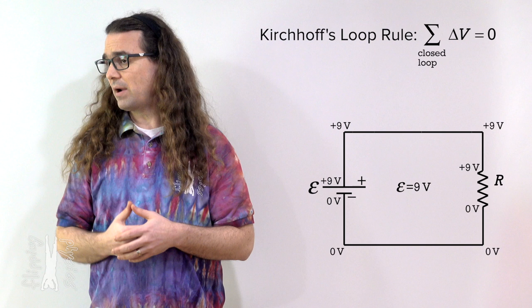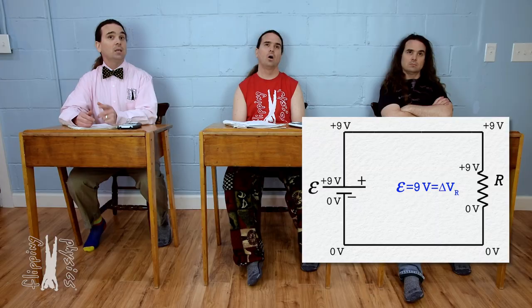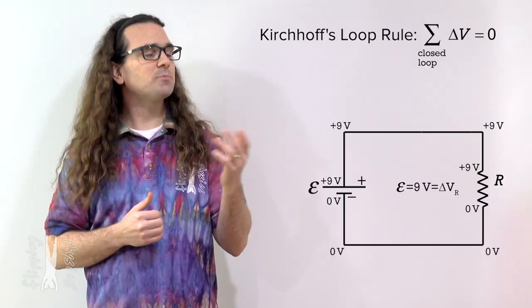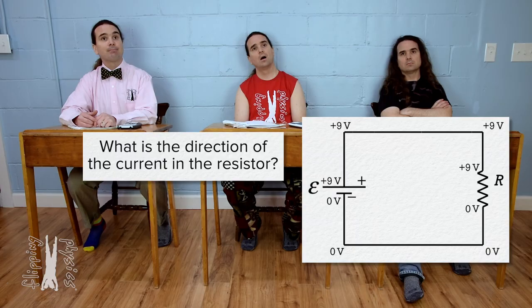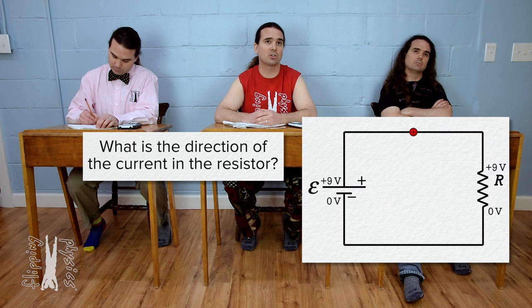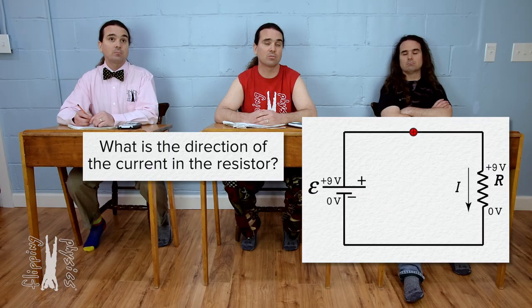This means the electric potential difference across the resistor also has a magnitude of 9 volts. In other words, in this circuit which has two circuit elements — the battery and the resistor — both have the same magnitude electric potential difference. What is the direction of the current in the resistor? A positive charge would be repelled from the positive terminal and attracted to the negative terminal, so the current in this circuit is clockwise — meaning the current is down through the resistor.